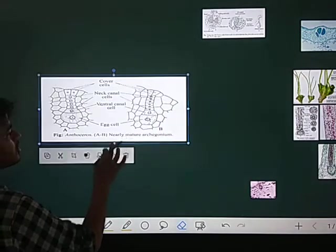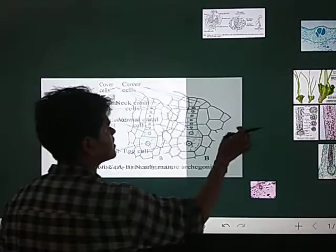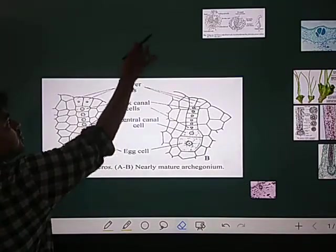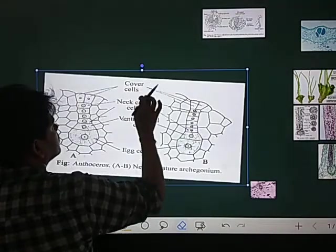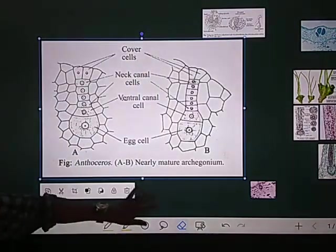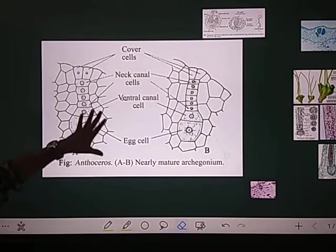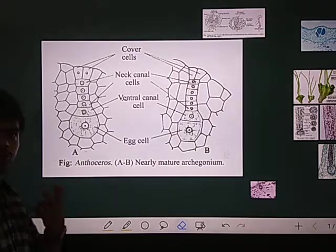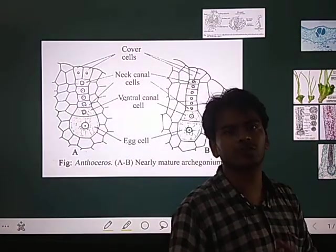The archegonia structure is similar to the typical structure we know about. You can see here a single archegonium with two parts: the lower swollen portion is the venter, and the upper portion is the neck.